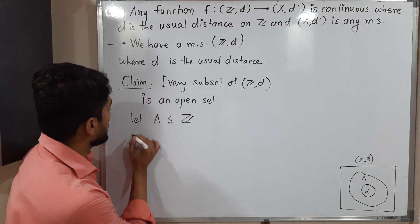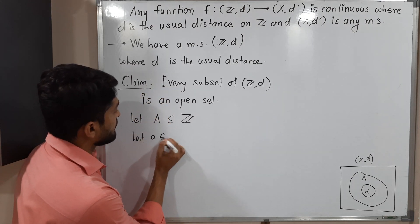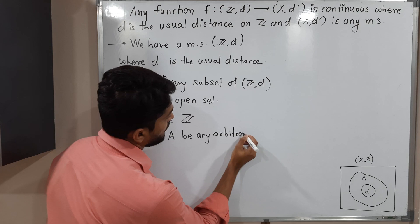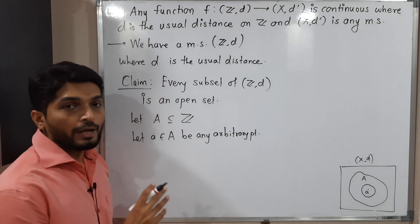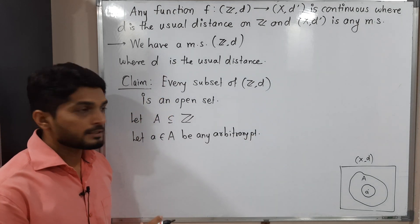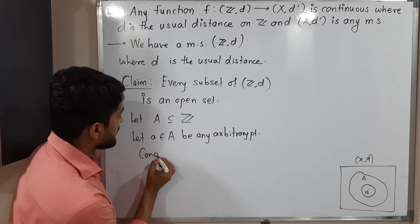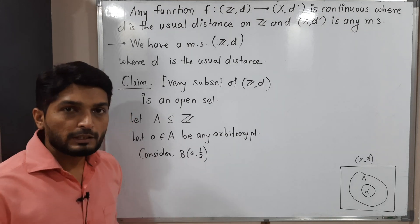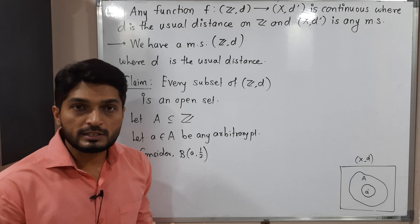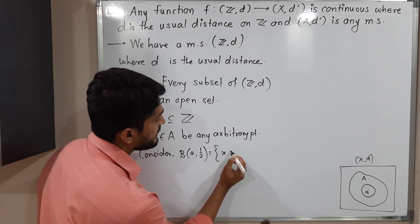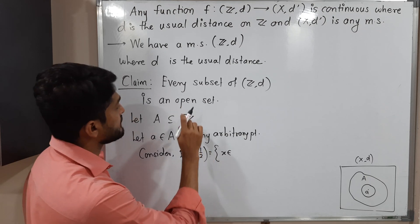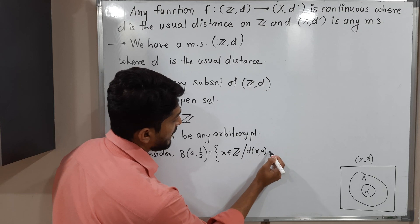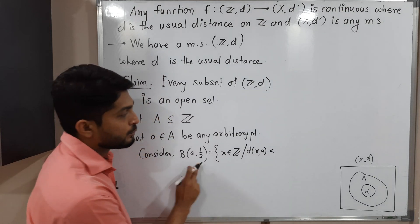Let small a belonging to capital A be any arbitrary point. Now we have to find a ball around a which is a subset of A again. I am going to consider a ball with center a and radius 1/2. The definition of open ball says it is a collection of all points of the metric space Z_d such that the distance between x and a is less than its radius, which is 1/2 here.